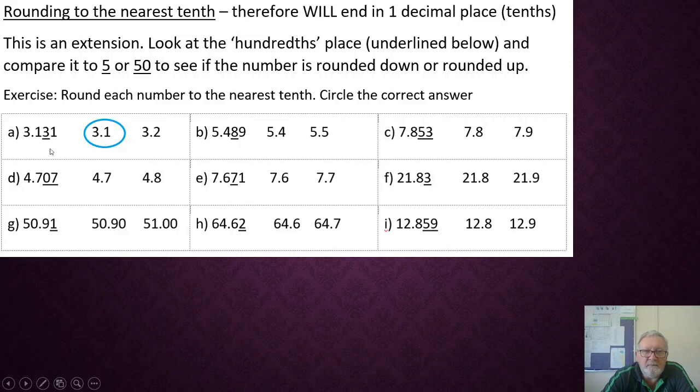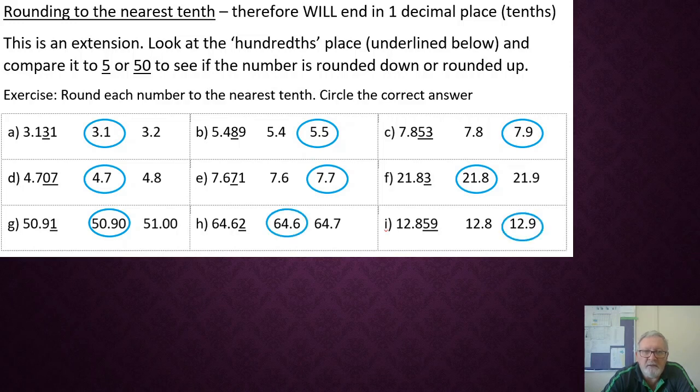Alright, let's see how you went on the next one. The eight is what you're looking at here. And so, is it closer to the next number, or the previous number? And eight is bigger than halfway, so it's rounded up to five and five tenths. Seven and nine tenths is the next answer. Four and seven tenths. Seven and seven tenths. Twenty-one and eight tenths. Fifty and nine tenths, or fifty and ninety hundredths, if you wanted to have it as two places. Sixty-four and six tenths. And twelve and nine tenths.